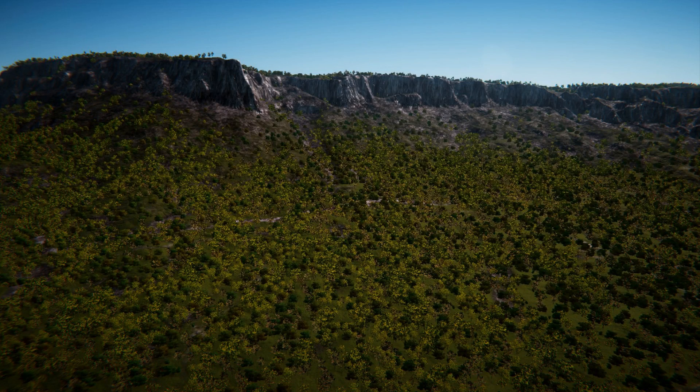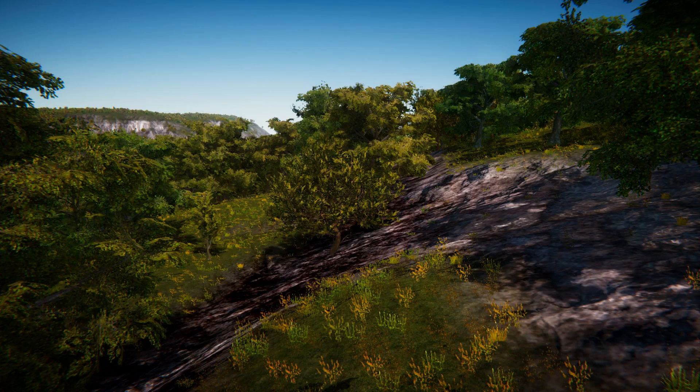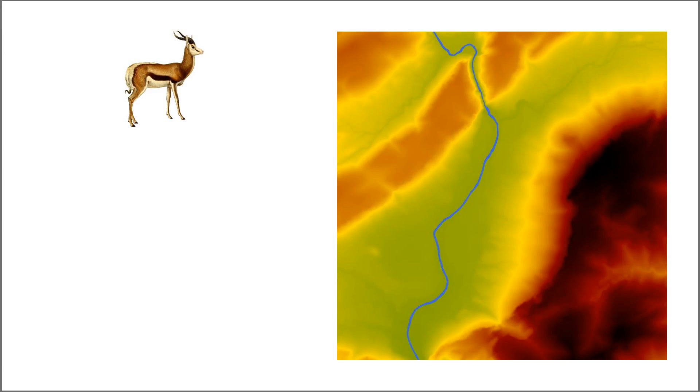We use the resource access graph to modify the terrain and the plant densities, adding clearings and trails. We also sample this graph to compute daily plannings of animals for on-the-fly exploration.